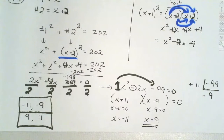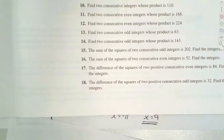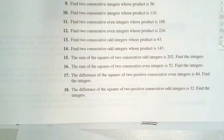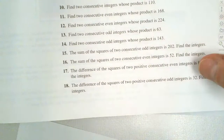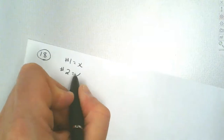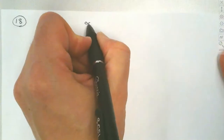Let's do one more consecutive integer problem, then we'll move on. We're going to look at question 18. This one's a difference — and when we talk about differences, we've got to make sure we subtract in the correct order. We want the difference of the squares of two consecutive positive odd integers equal to 32. These are odd, so the gap is 2: first number is x, second is x plus 2.